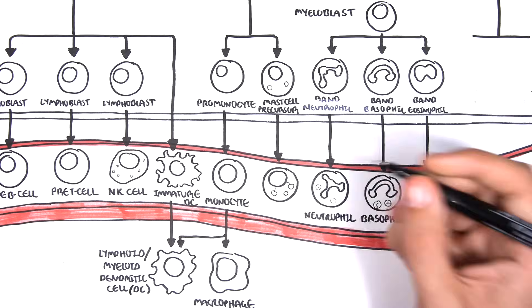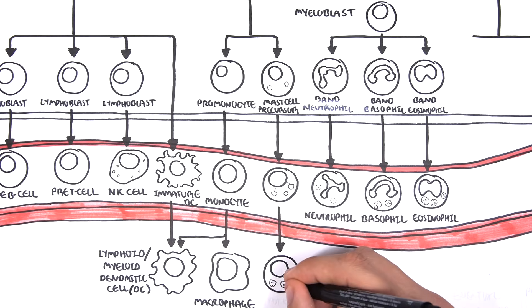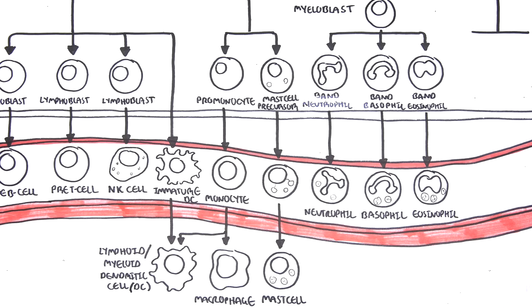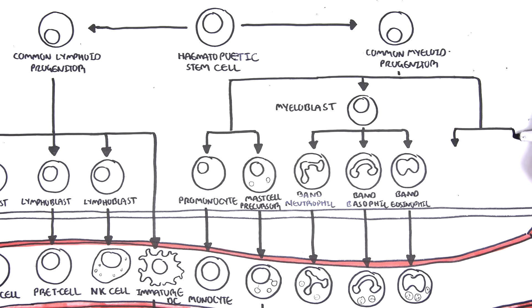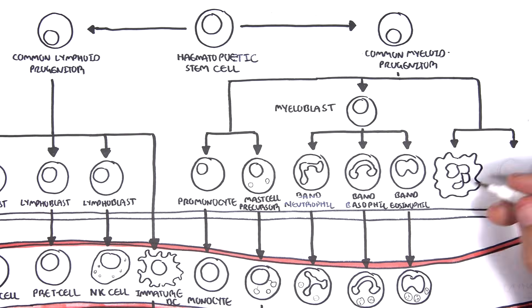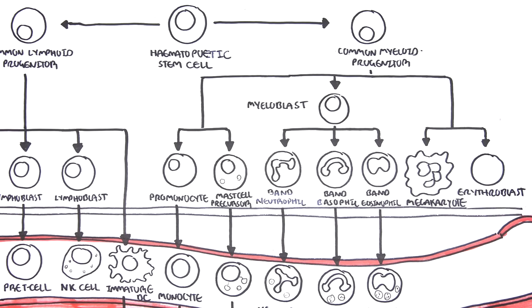The mast cell precursor can become mature mast cells once they enter circulation and move into tissues. Mast cells are very important cells in allergy, the inflammatory response, and hypersensitivity. Finally, the common myeloid progenitor cell can differentiate and become megakaryocytes with stimulation of thrombopoietin, a hormone produced by the liver and the kidneys. Or, the myeloid progenitor cell can become erythroblasts through stimulation of erythropoietin, a hormone released by the kidneys.